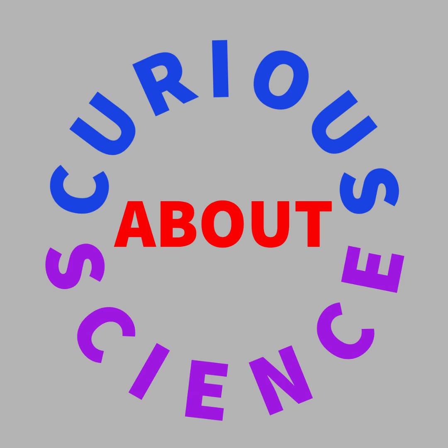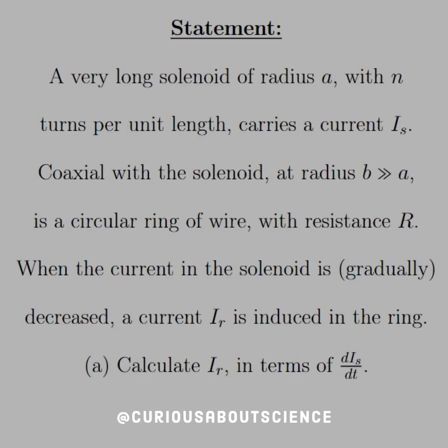All right, we have a slightly long question but not that long of an answer, so we'll just barrel through it. Our statement reads: a very long solenoid of radius A with n turns per unit length carries a current IS. Coaxial with this solenoid at radius B much greater than A is a circular ring of wire with resistance R. When the current in the solenoid is gradually decreased, a current IR is induced in the ring.